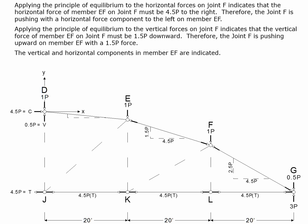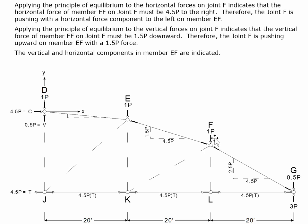At joint F, there is a 4.5P force to the left, so this compression member must push to the right with a horizontal component of 4.5P. For vertical equilibrium: the 2.5P upward component from below and the 1P downward applied force leave a net upward force of 1.5P, so this member must push down with a vertical component of 1.5P. The member has horizontal component 4.5P and vertical component 1.5P.